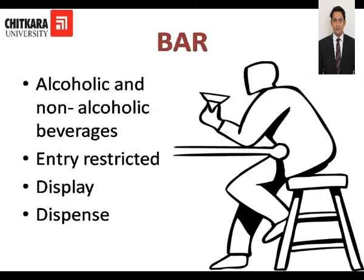The next outlet in a hotel is the bar. Features of a bar: it sells alcoholic and non-alcoholic beverages along with food snacks. It is an entry-restricted area with certain age restrictions. Rules vary from state to state, and most bars are open from 10–11 AM to 11 PM. There are two types of bar. The first is the display bar, which has a display of alcoholic beverages and glasses; drinks are prepared in front of the guest and direct sales are made. The second is the dispense bar, situated in the back area and mainly used for storage and service of drinks in food and beverages outlets.